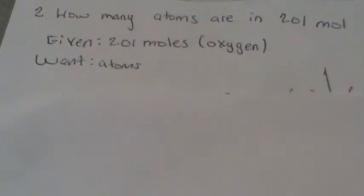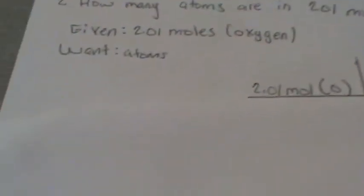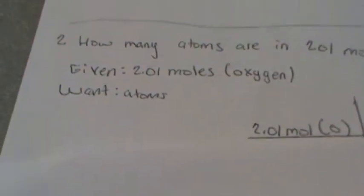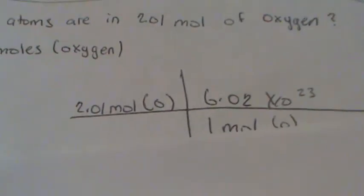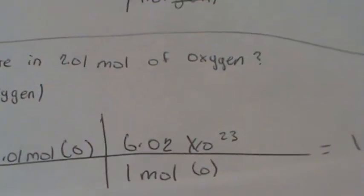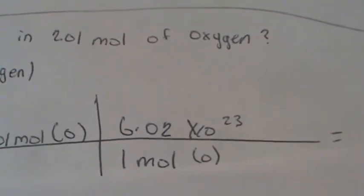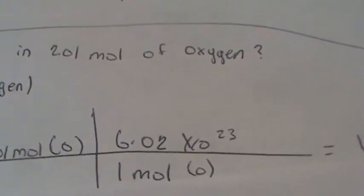So we will now put our train tracks. We put 2.01 moles. That's our given. And we put oxygen. On the top, on the next one, we put 6.02 times 10 to the 23rd.